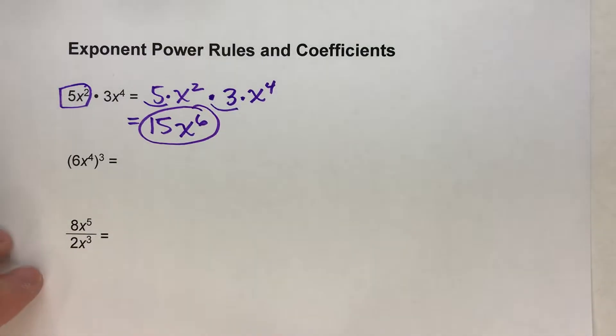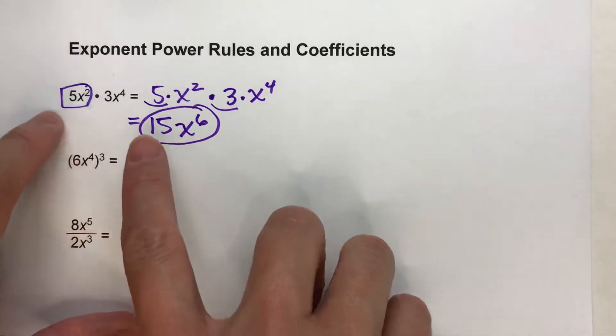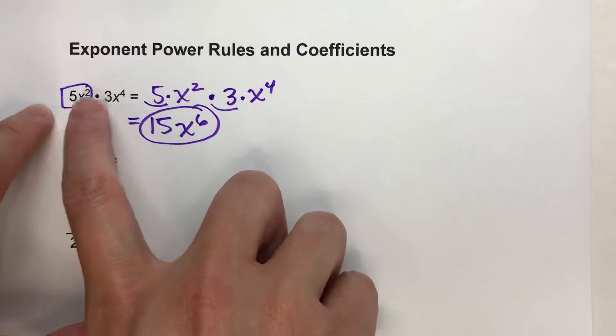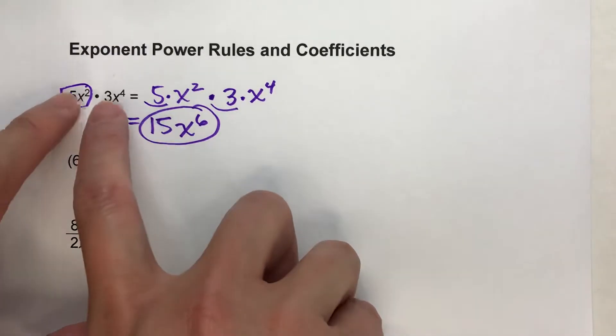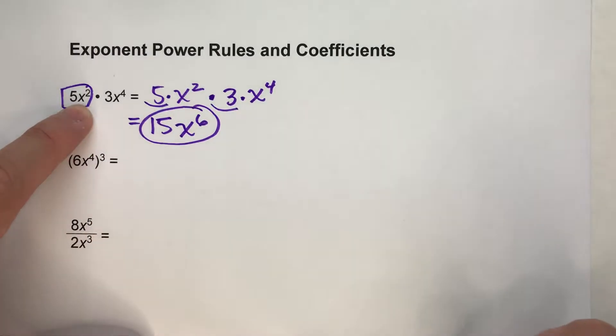So it's not particularly difficult, but the tricky thing is you have to remember you have to treat the coefficients just like normal math and just multiply it like normal. But you have to treat the powers differently using the power rules.